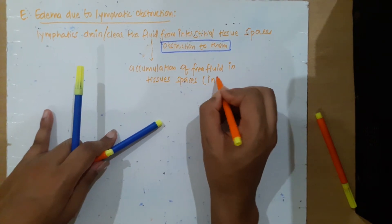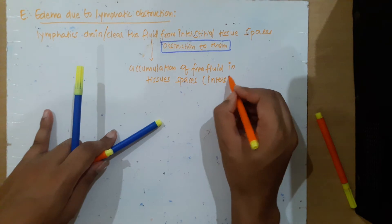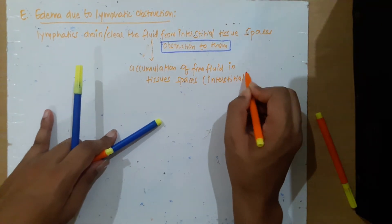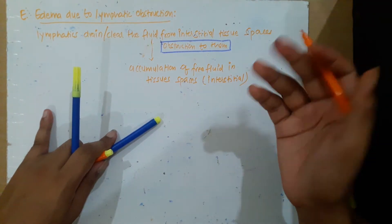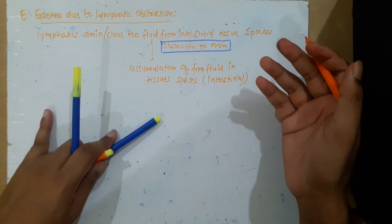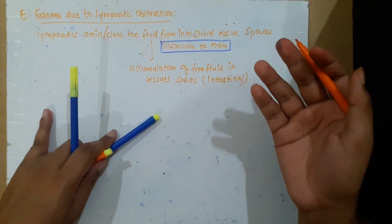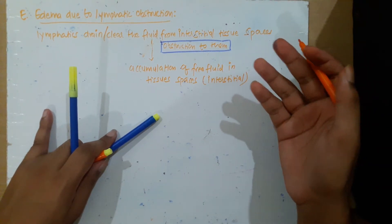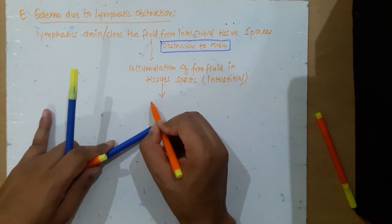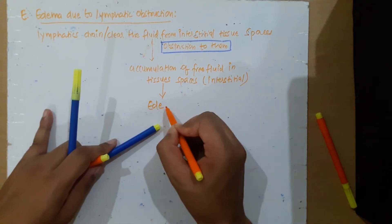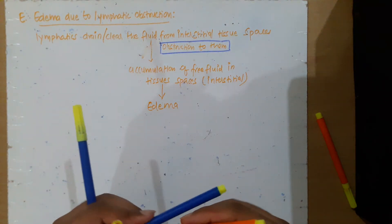This accumulation — excessive and abnormal accumulation of free fluid in the interstitial tissue spaces or serous cavities — is known as edema. So lymphatic obstruction will result in edema.